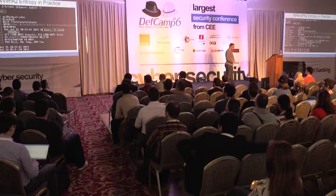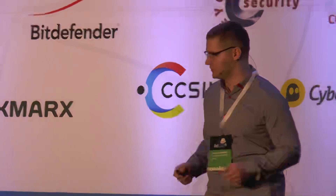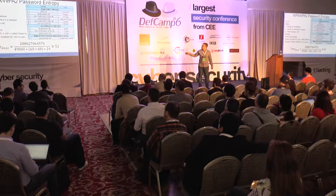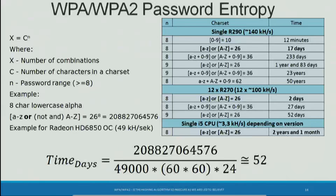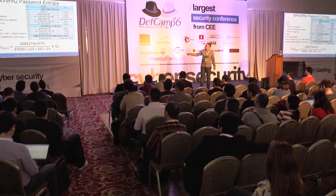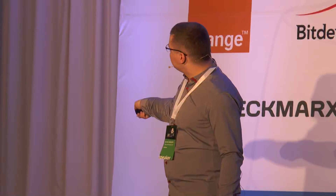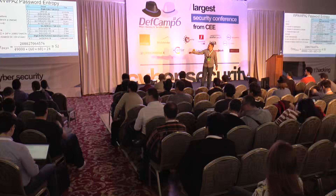I am not targeting UPC particularly — this is an example of a broadband provider using security in a very wrong way. Watch what happens if we add just one character to our passphrase — not 8 but 9 characters. Still with 26 possible characters in the passphrase, this is almost 2 years for a single modern GPU. And for a little farm, for a 9-character passphrase, we have 52 days — exactly the same time as an 8-character password takes on the outdated Radeon.